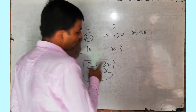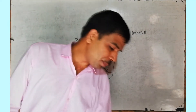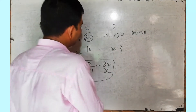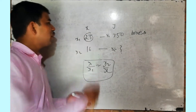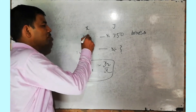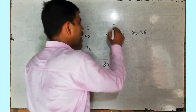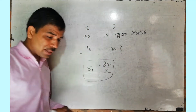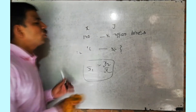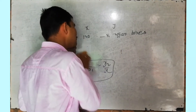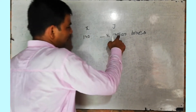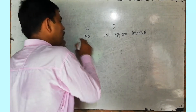Next question — question number 2: The cost of 140 tennis balls is Rs. 4900. Again we have 140 tennis balls with a price of 4900. The question says: find the cost of two dozen such balls. Two dozen means — one dozen means 12, two dozen means 24.